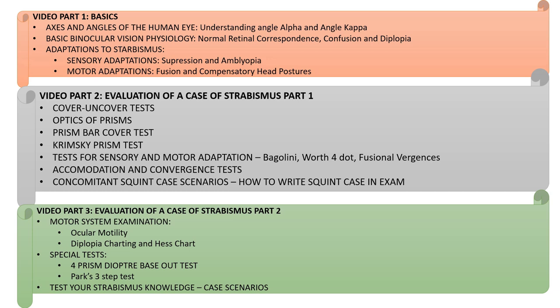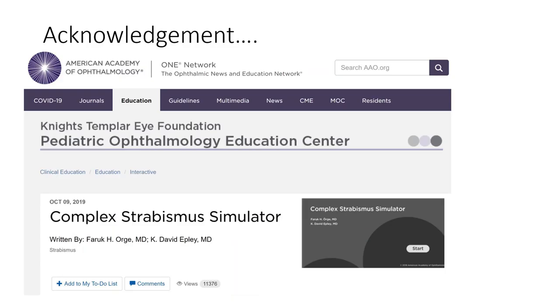Like in the previous video, I have shown the video time in minutes next to each subsection in case you want to skip to only that part. I want to acknowledge the American Academy of Ophthalmology for their excellent online free strabismus simulator which I have used in this video to explain many of the tests for squint. This is an excellent tool and I encourage all residents and trainees to use it individually for maximum benefit.